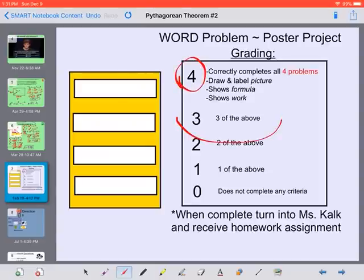If you only do 3 of the questions, you'd get a 3. 2 would get you a 2. And 1 would get you a 1. Unless it's not complete work. So if you have any questions, please let me know.